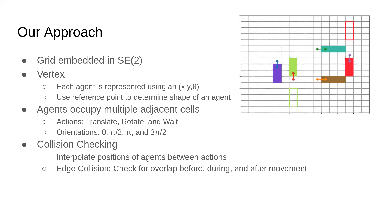For collision checking, we interpolate the position of agents between actions to determine the space occupied during movement. With our approach, we check for edge collisions or overlaps between the shapes of agents before, during, and after movement.